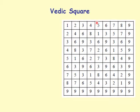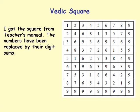This is a Vedic square. I created this square by replacing the entries in the multiplication table with their digit sums. This table also comes from the teacher's manual. The numbers have been replaced by their digit sums.